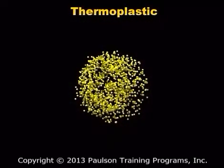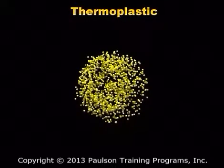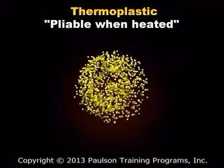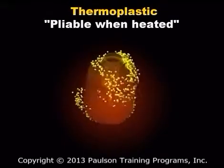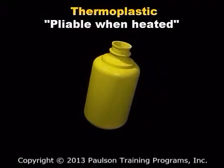The other broad category of plastic is thermoplastic. In a thermoplastic, the polymer molecules do not attach to one another. Thermoplastic means pliable when heated. Each time a thermoplastic is heated, the polymer molecules can be made to flow, and then the plastic can be formed into a new shape.